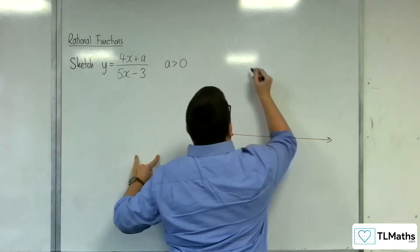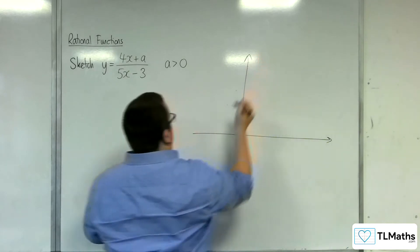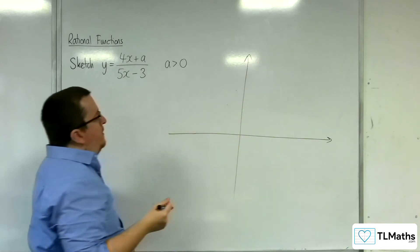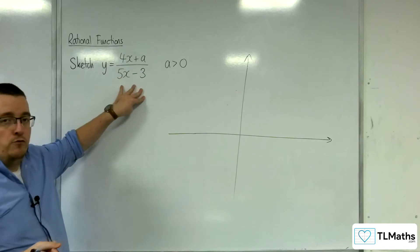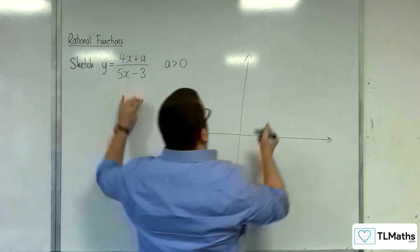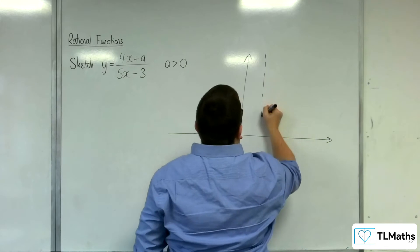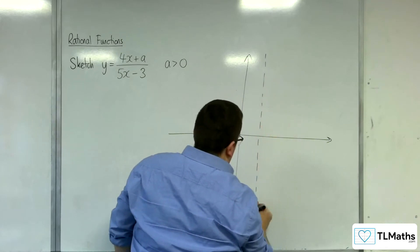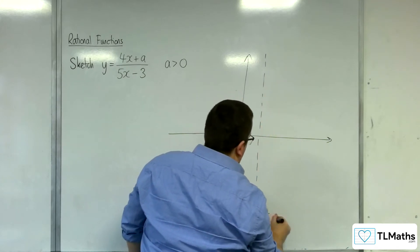Okay, so let's draw some axes first. Right, let's identify where the vertical asymptote is. That's when the denominator is 0, so at 3 fifths. So x equals 3 fifths is a vertical asymptote.